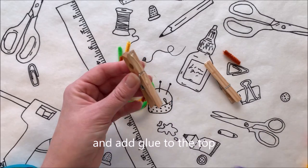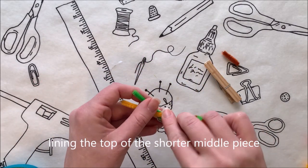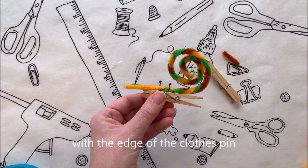Grab a clothes pin and add glue to the top and attach the snail body, lining the top of the shorter middle piece with the edge of the clothes pin.